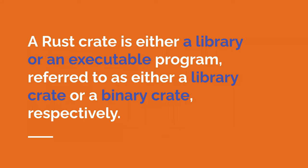A Rust crate is either a library or an executable program, referred to as either a library crate or a binary crate respectively. If you're familiar with C++, it's like a build target — it could be a library build target or an executable target that becomes an .exe on Windows. It's basically a separate unit of compilation that produces an output file — either a binary library or a binary executable.